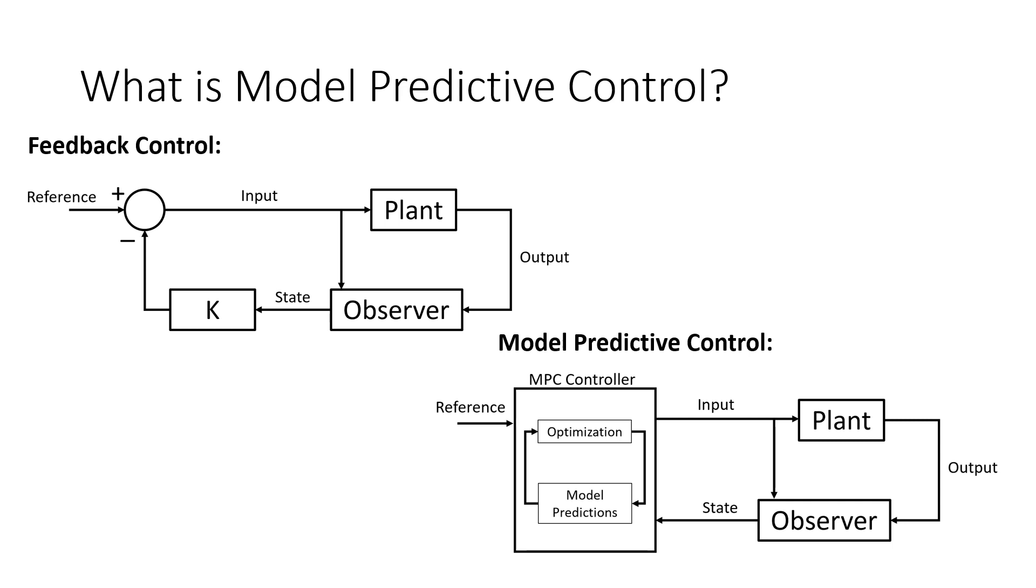One common example to demonstrate the difference is driving a car. A traditional feedback controller is like driving the car while only looking out the back window. The driver can give the car an input based on where the current location of the car is. In a model predictive controller, it's like driving the car looking down the road. The driver estimates the effect that their input will have on the car and then determines the optimum input for their desired output.